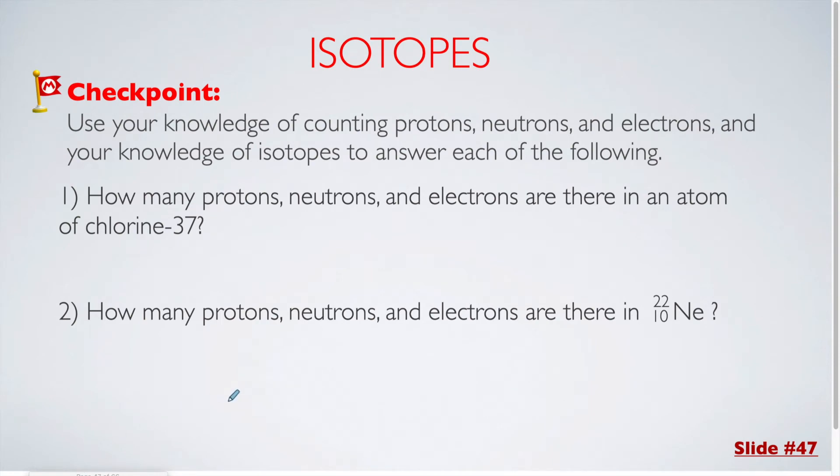For our first checkpoint question, you're going to use your knowledge of counting protons, neutrons, and electrons, and your knowledge of isotopes to answer each of the following. First up, how many protons, neutrons, and electrons are there in chlorine-37?